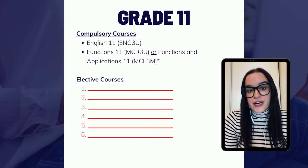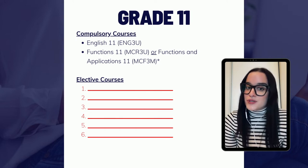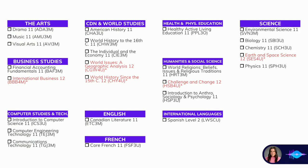Beyond the two compulsory credits, students get the option to choose six elective courses to round out the rest of their schedule. Here is the full list of grade 11 courses offered, organized by category across various departments. Courses highlighted in red are reach-ahead courses — as long as students have the appropriate prerequisite, they are allowed to take grade 12 courses while still in grade 11.